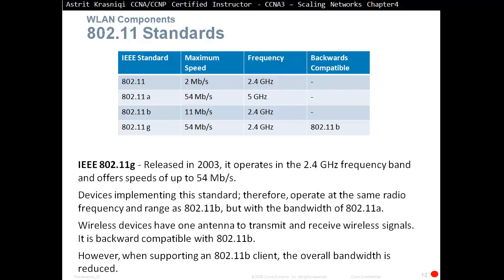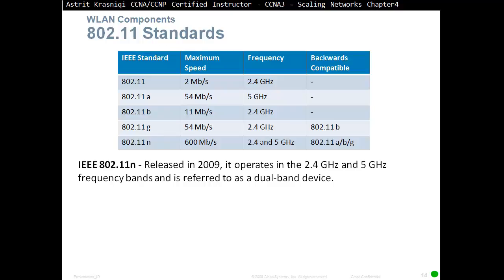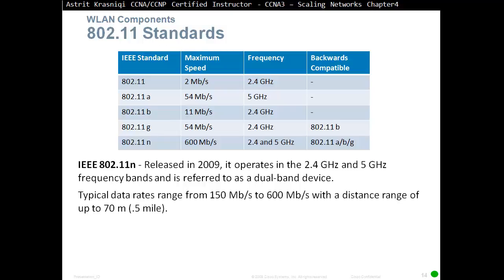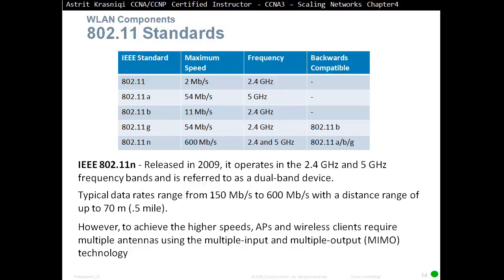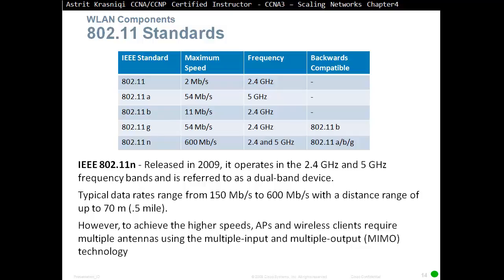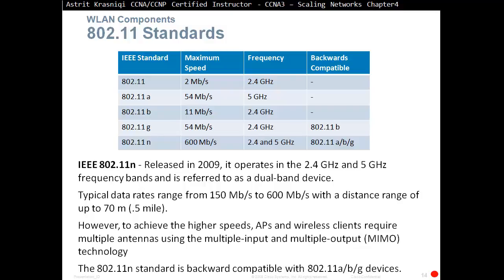802.11n was released in 2009 and operates at both 2.4 GHz and 5 GHz frequency bands, making it a dual band device. Data rates range from 150 Mbps up to 600 Mbps with a distance range of up to 70 meters. To achieve higher speeds, access points and wireless clients require multiple antennas using MIMO — Multiple Input Multiple Output — technology. The 802.11n standard is backward compatible with 802.11a, b, and g devices.